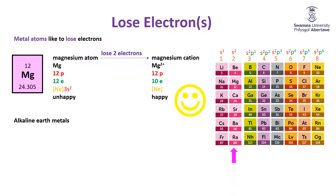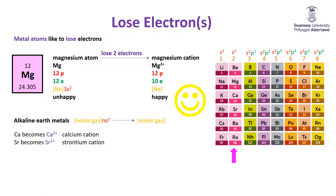The alkaline earth metals — group 2 — have a general electron configuration of a noble gas, ns². Beryllium is [He]2s², magnesium is [Ne]3s², and so on. All of them lose those two electrons to get down to the noble gas configuration: calcium becomes Ca²⁺, strontium becomes Sr²⁺, etc. Alkali metals unambiguously form 1⁺ cations; alkaline earth metals unambiguously form 2⁺ cations. Get that in your heads now and it will sort out an awful lot of issues later on.